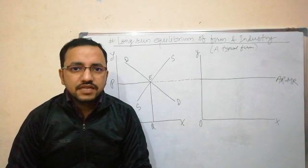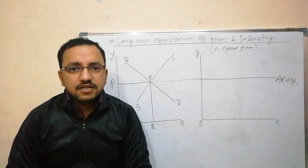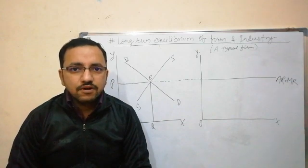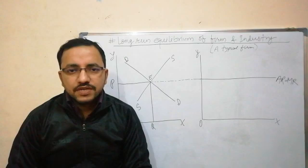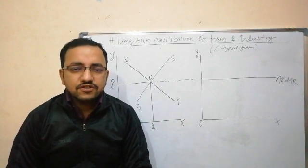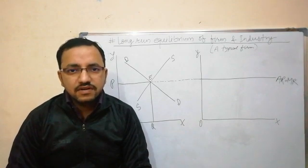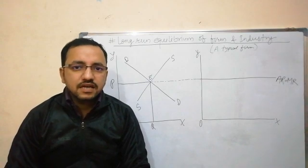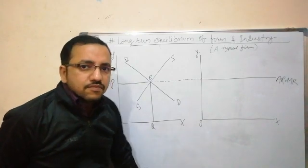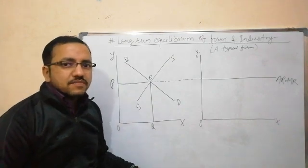Similarly, whenever a firm is suffering losses in the long run, it will exit the market, because no firm can sustain losses in the long run. Therefore, all firms in the long run will earn only normal profit, which is defined as average cost equal to average revenue. Now, diagrammatically, we will study the equilibrium condition of an industry and a typical firm.